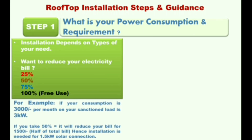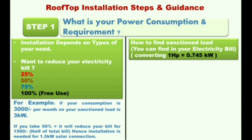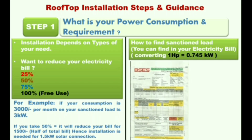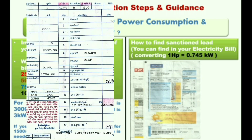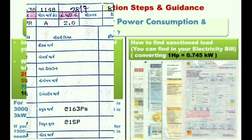For example, if your sanctioned load is 3 kW and you want to reduce your bill by 50%, you will need an installation of 1.5 kW. You might wonder how to find your sanctioned load — you can find this from your electricity board bill copy, where it is mentioned in horsepower or kW as the connection of your residence.